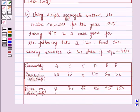In Part B, using the simple aggregate method, the index number for the year 1995 taking 1990 as the base year is 120. Find the missing entries in the data if summation P0 equals 460. The commodities are A, B, C, D, E, and F. The prices in 1990 are 48, 65, X, 75, 80, and 120. The prices in 1995 are Y, 70, 77, 85, 95, and 150.